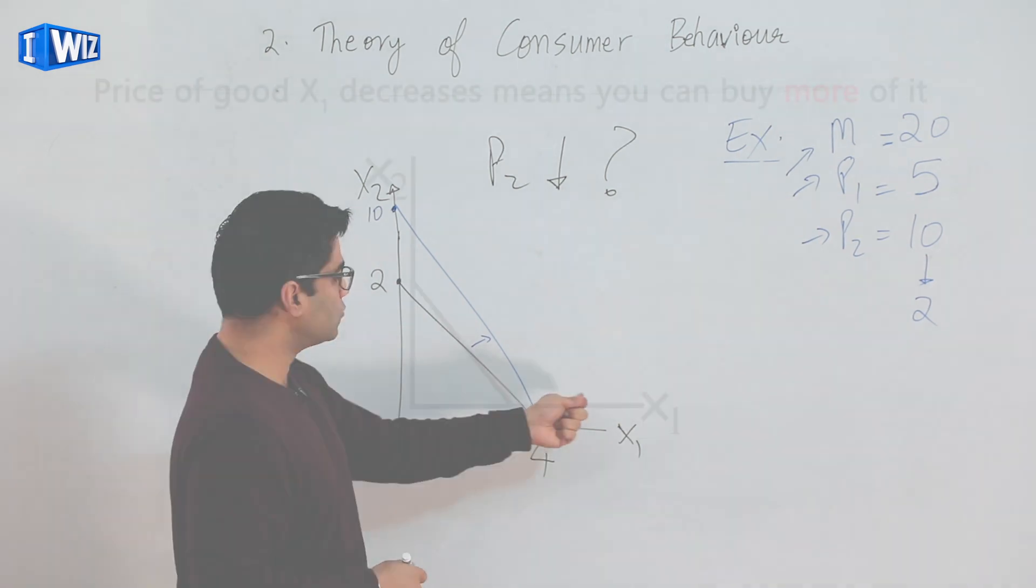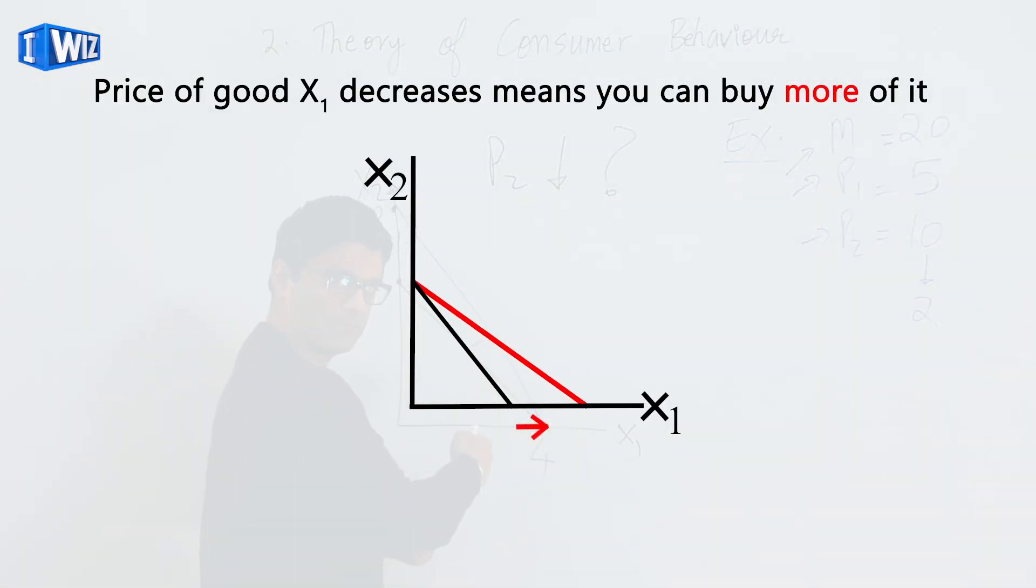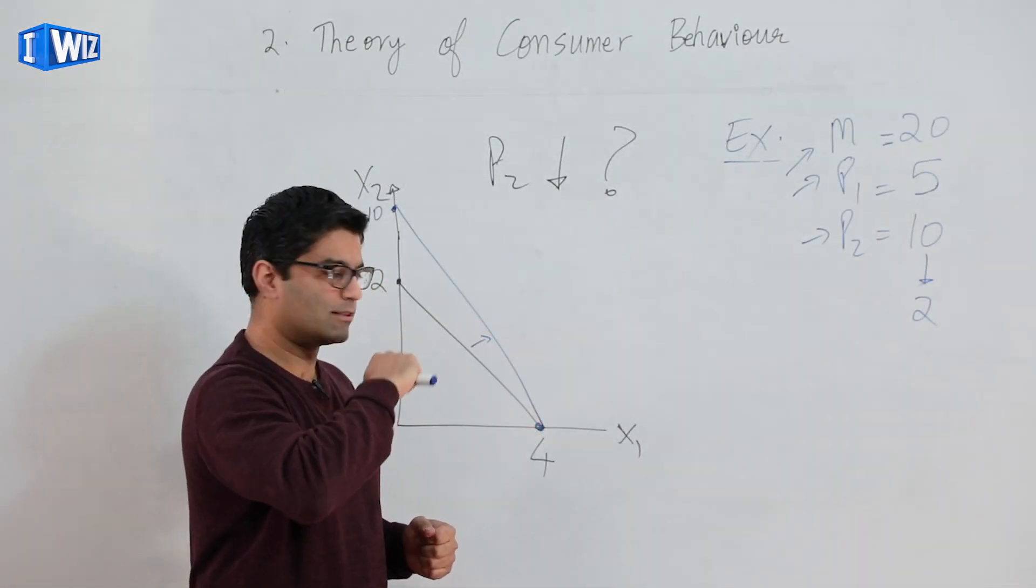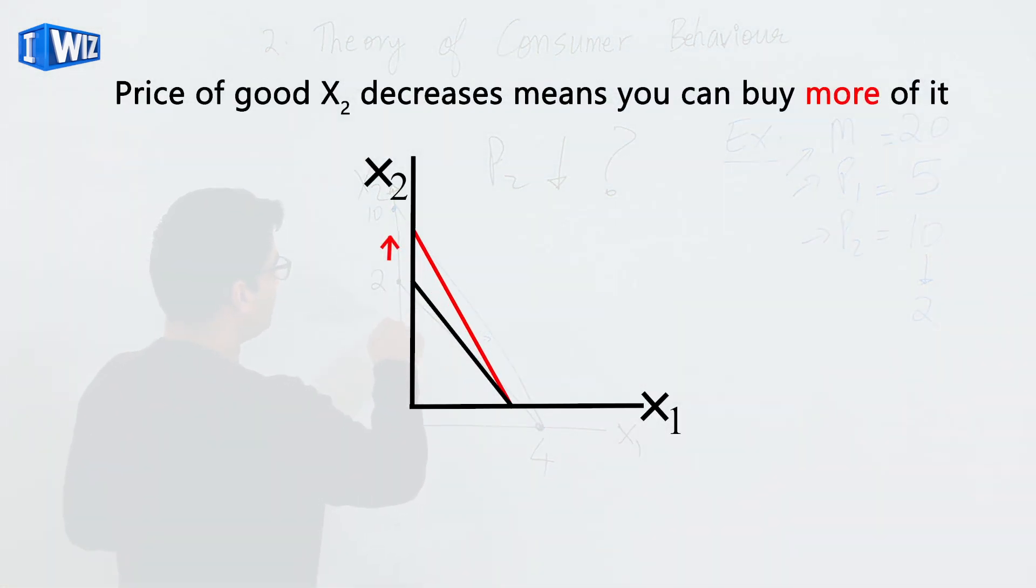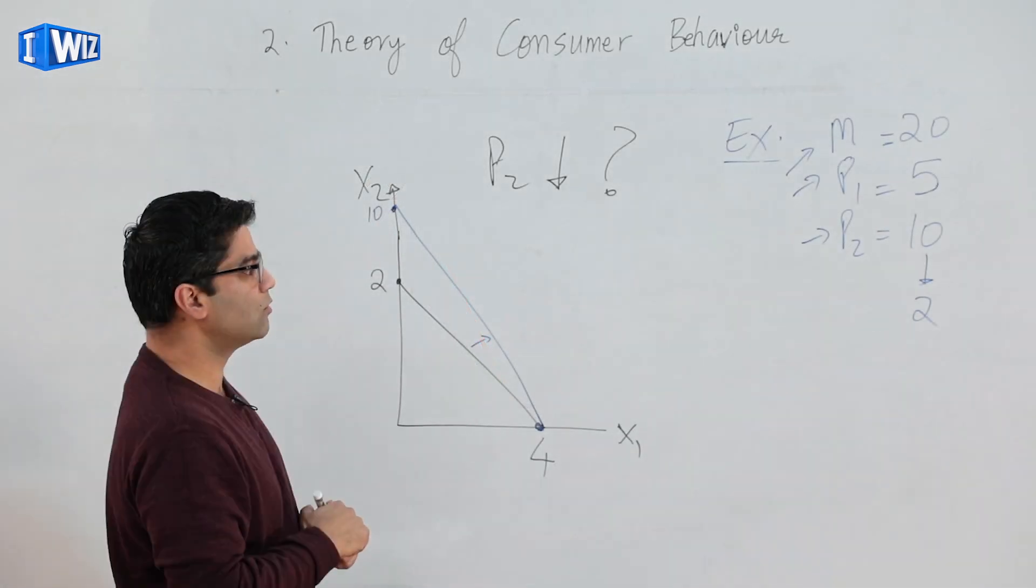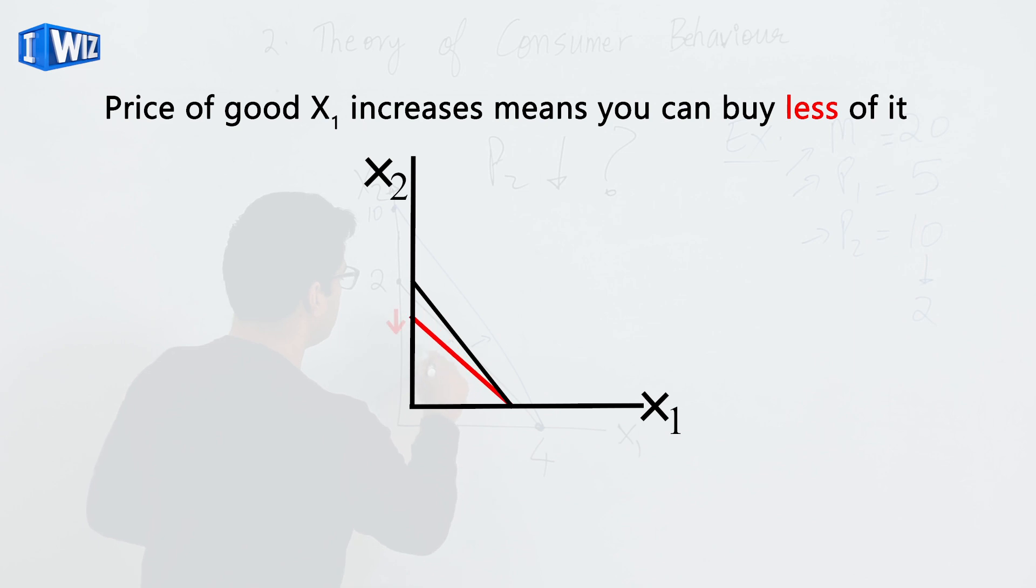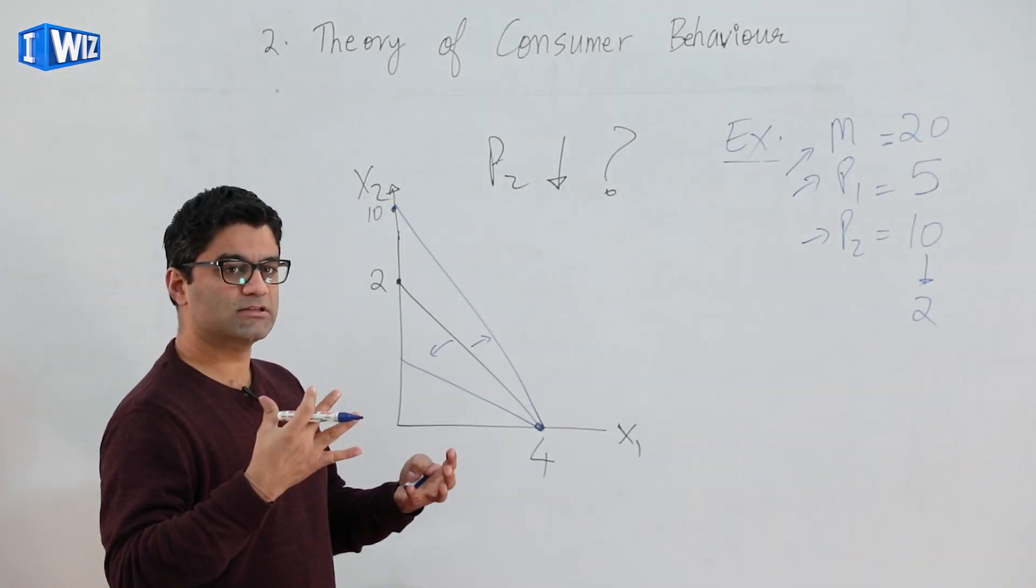Price of good two when that goes down, this line pivots outward on the vertical axis. And if price of good two were to go up, then this line would pivot inward in that fashion. So those are all the six possibilities, increasing and decreasing for all these three, and you're looking at how your options for the budget constraint changes.